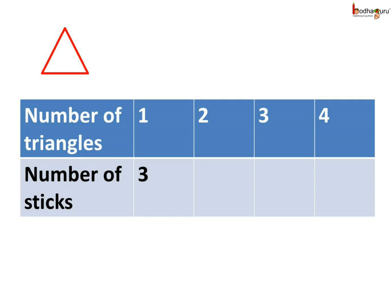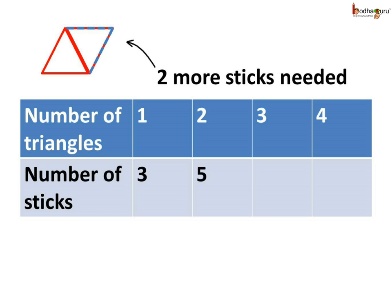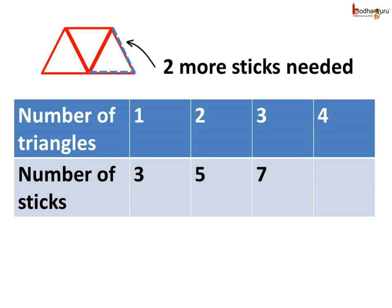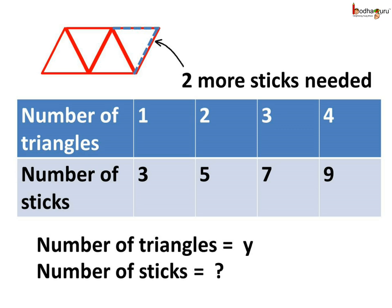Now let us make a pattern of triangles. One triangle is made of three sides, so three sticks are needed for it. Now let us add one more triangle. For this we need two more sticks as one side is common. So two triangles need five sticks. Now two more sticks are needed to add the third triangle, so three triangles need seven sticks. Now let us add the fourth triangle — again two more sticks are required. There is a fixed relation between the number of triangles and the sticks required for the given pattern.